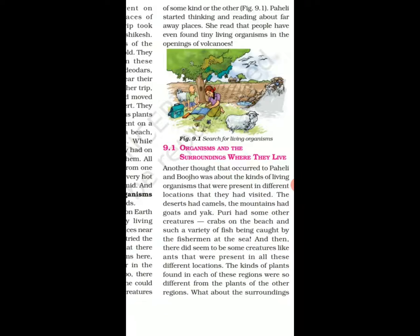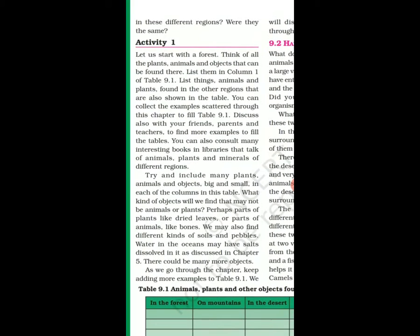We shall go through activity one to understand this more. Let us start with the forest. Think of all the plants, animals, and objects that can be found there. You can list out the things — plants, animals, and also the objects found in a forest — in column 1 of table 9.1. You can consult interesting books, ask your parents and friends to make this list. Try and include many plants, animals, and objects, big and small.